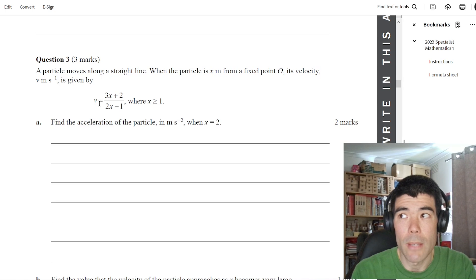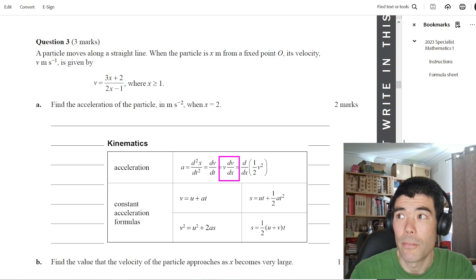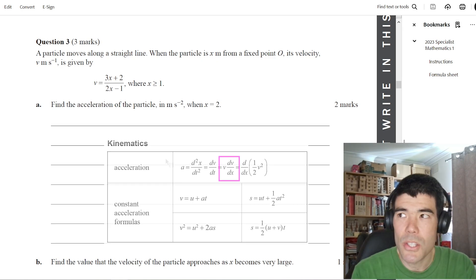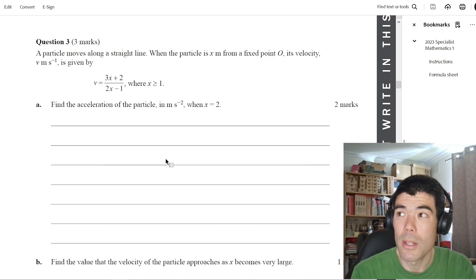Question three, kinematics question, we're given V, we're given X, we're asked to find acceleration. So VDVDX is the form for acceleration we want to use here. Assessor's report said this question was not that well done. So maybe a hint that that would come up again.